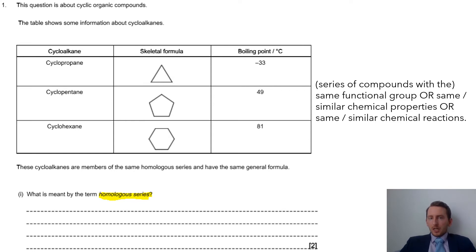If you know your definitions then it's two easy marks. For this we need something along the lines of same functional group, a series of compounds with same functional group or similar chemical properties. Then we also need to say that successive members differ by CH2. If you don't know your definitions, make sure you go away and get them sorted out.